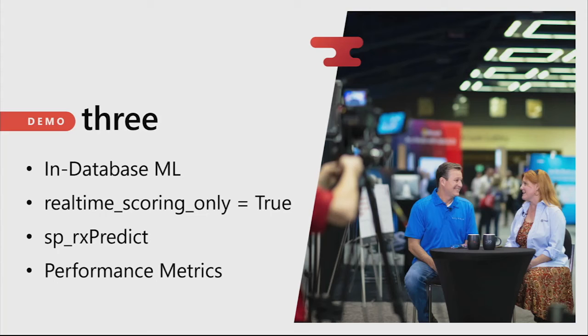For in-database ML, to do real-time scoring you need to serialize a new model to generate real-time predictions against. This allows us to call our model using the function sp_rxPredict, which is new in SQL Server 2017. The predict function is also new in 2017. Those real-time options weren't available in 2016, and I'll show you the performance metrics.